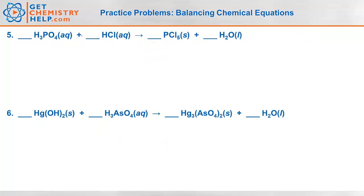Number five: phosphoric acid reacts with hydrochloric acid to produce phosphorus pentachloride and water. Hydrogen appears in two different places on the left-hand side, so we'll balance hydrogen last. Balancing phosphorus: one on each side. Four oxygens — let's make that four oxygens. One chlorine versus five chlorines — let's make that five chlorines. Now doing hydrogen last: three plus five is eight hydrogens on the left; four times two is eight on the right.